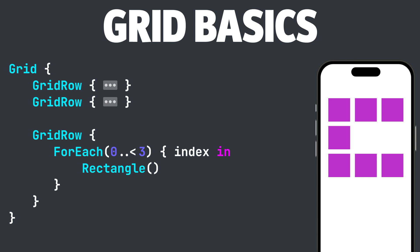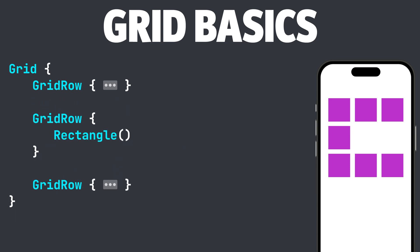Now that we understand how columns work, what if we wanted to have the middle rectangle move to the center column? We can use the .gridCellUnsizedAxes modifier. Let's see how that works.